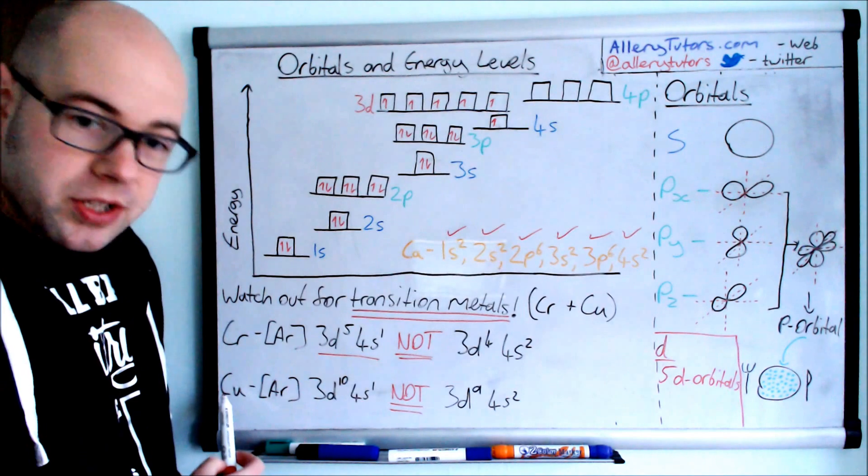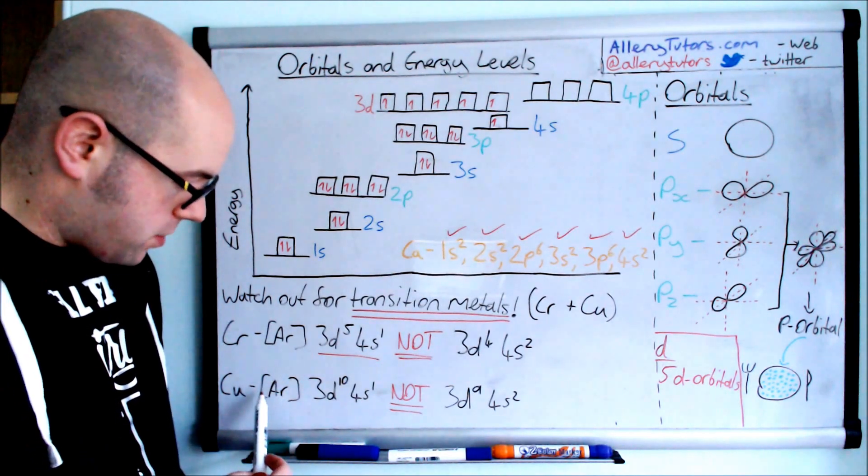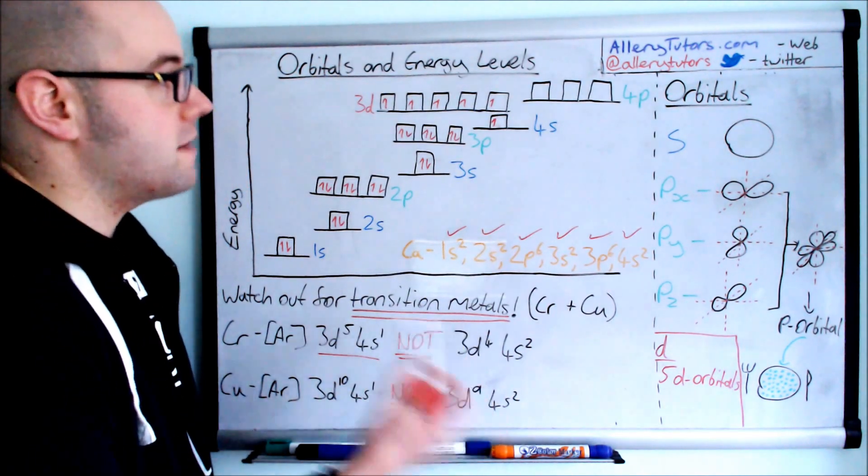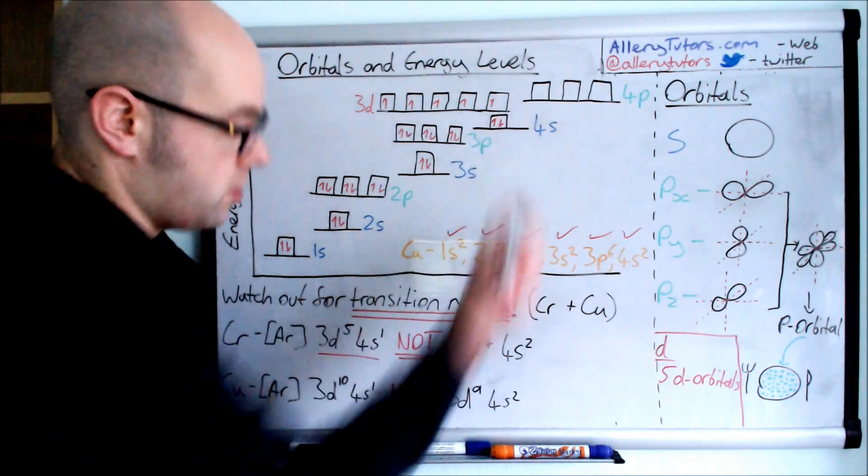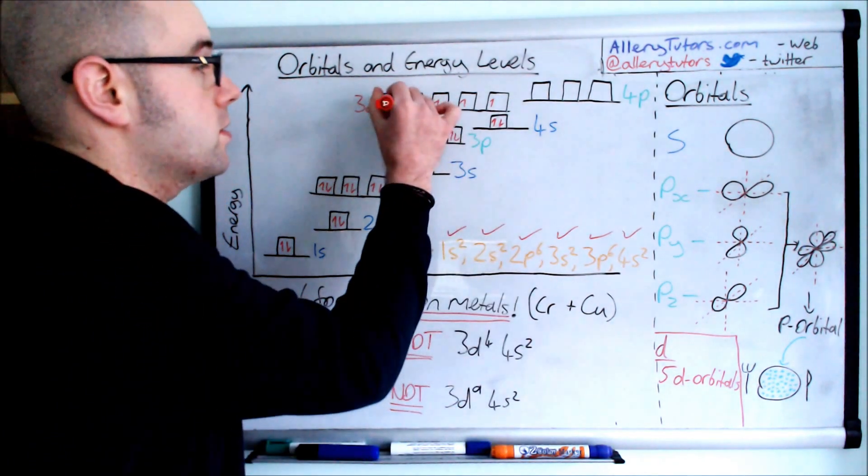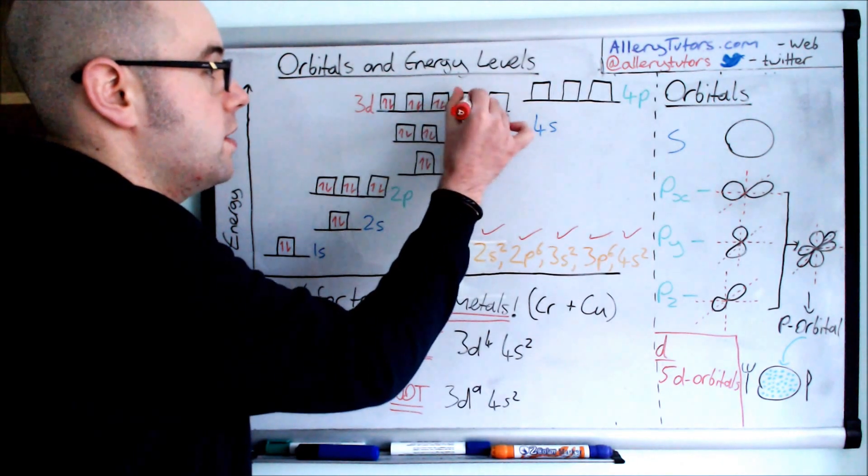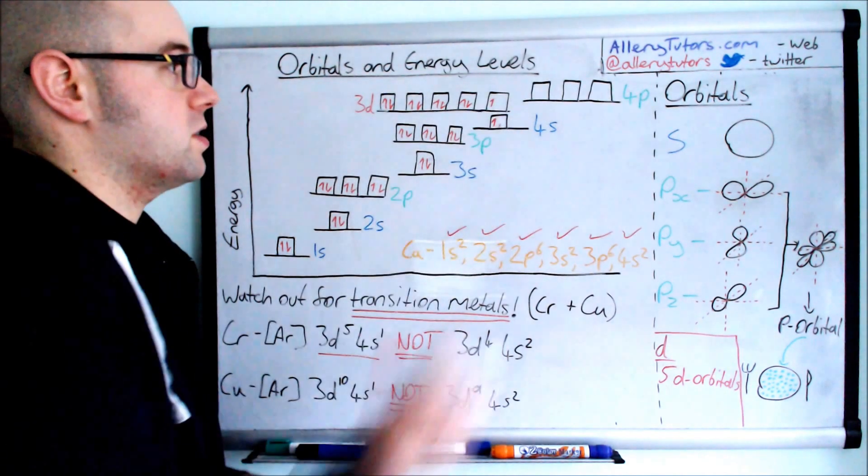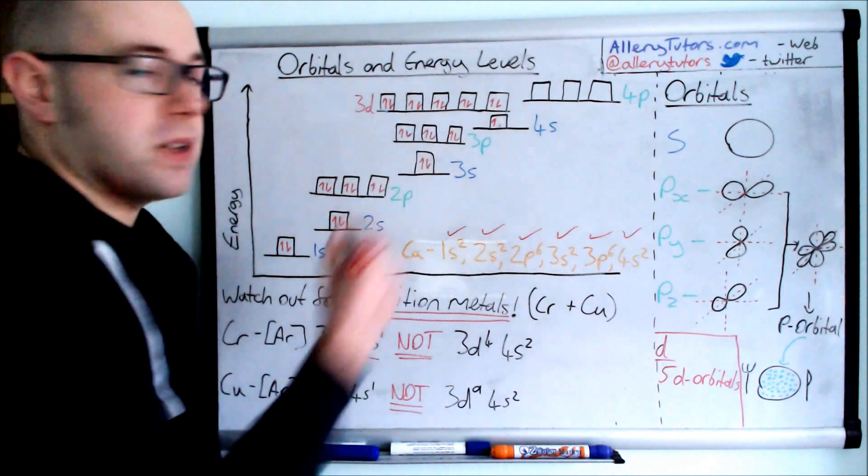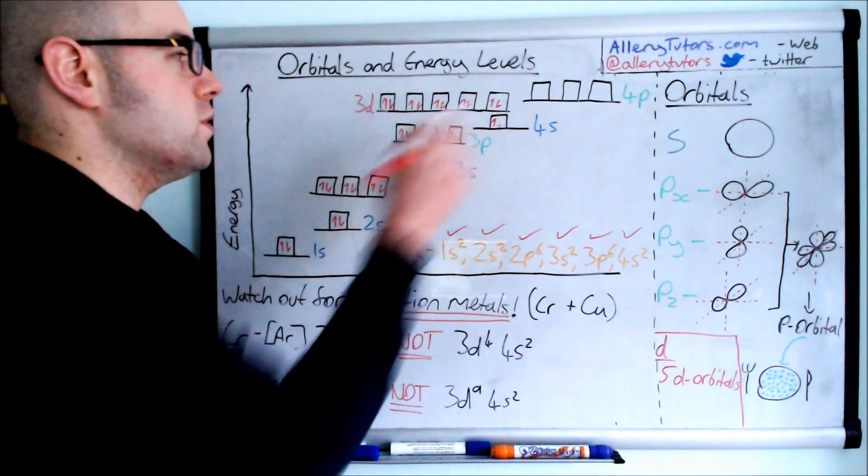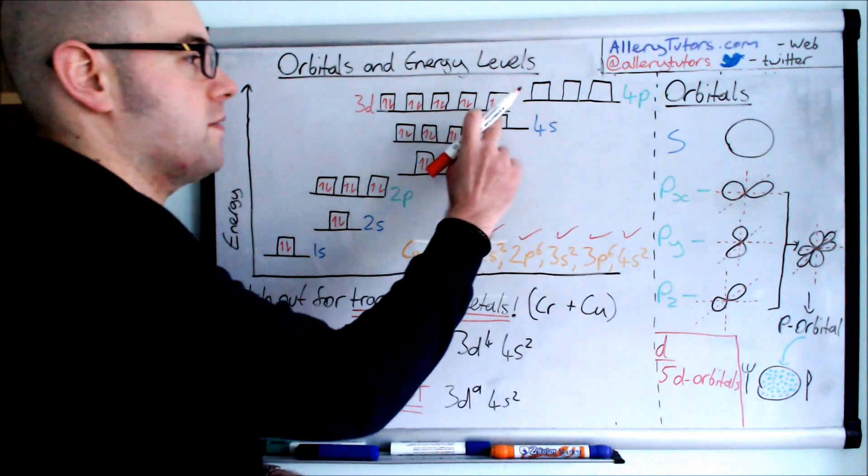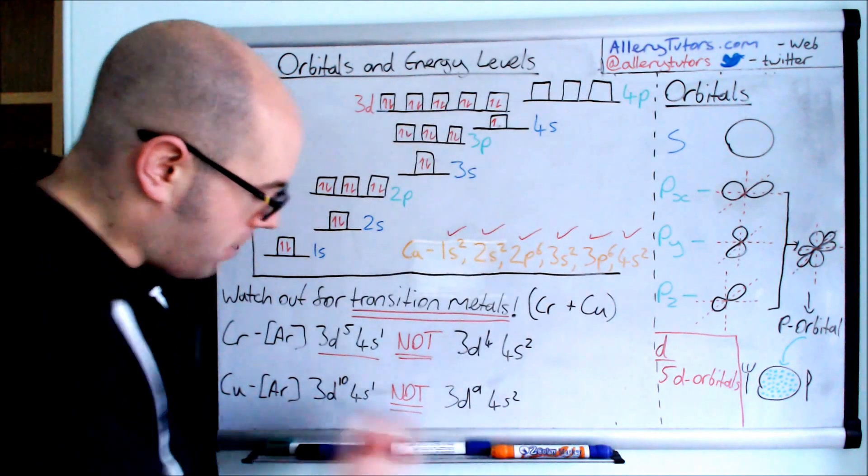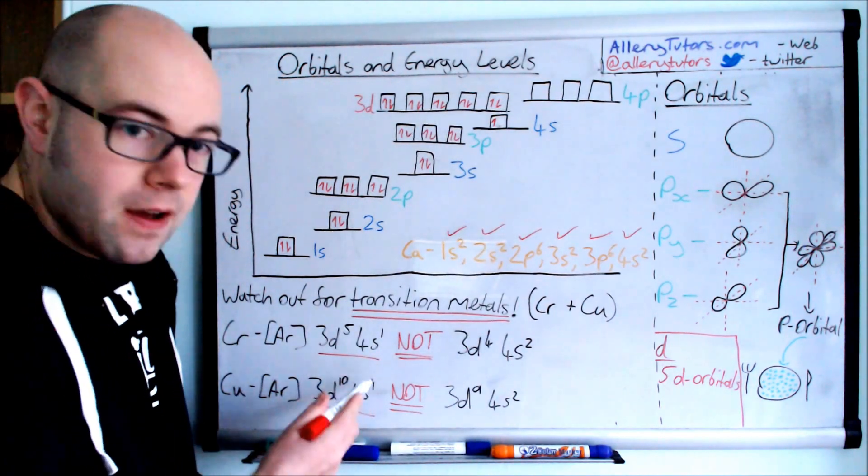If we go on to copper, it's actually 3d10, 4s1, not 3d9, 4s2. Again, for the same reason. If it was 3d9, 4s2, the electron that was in the 4s now flips up into this other shell here. This is because it's lower in energy to have a full 3d sub-shell than to have one with a gap in there and a full 4s. So this is why we form this configuration, which is 3d10, 4s1.